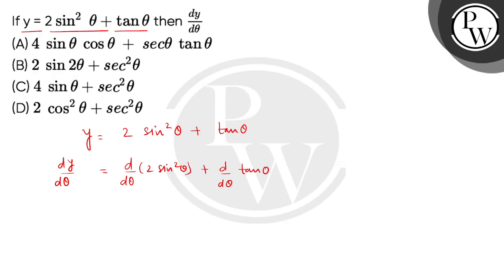So बच्चों, हमें first term का answer मिल जाएगा. सबसे पहले तो 2 बाहर आजाएगा. अब यह होगा d by d theta of sin square theta, which is 2 sin theta. And because यह function of a function है, तो हम फिर से d by d theta of sin theta लेंगे, which is equal to cos theta, then plus tan theta का derivative बच्चों, d by d theta of tan theta को हम लिखते हैं, sec square theta.